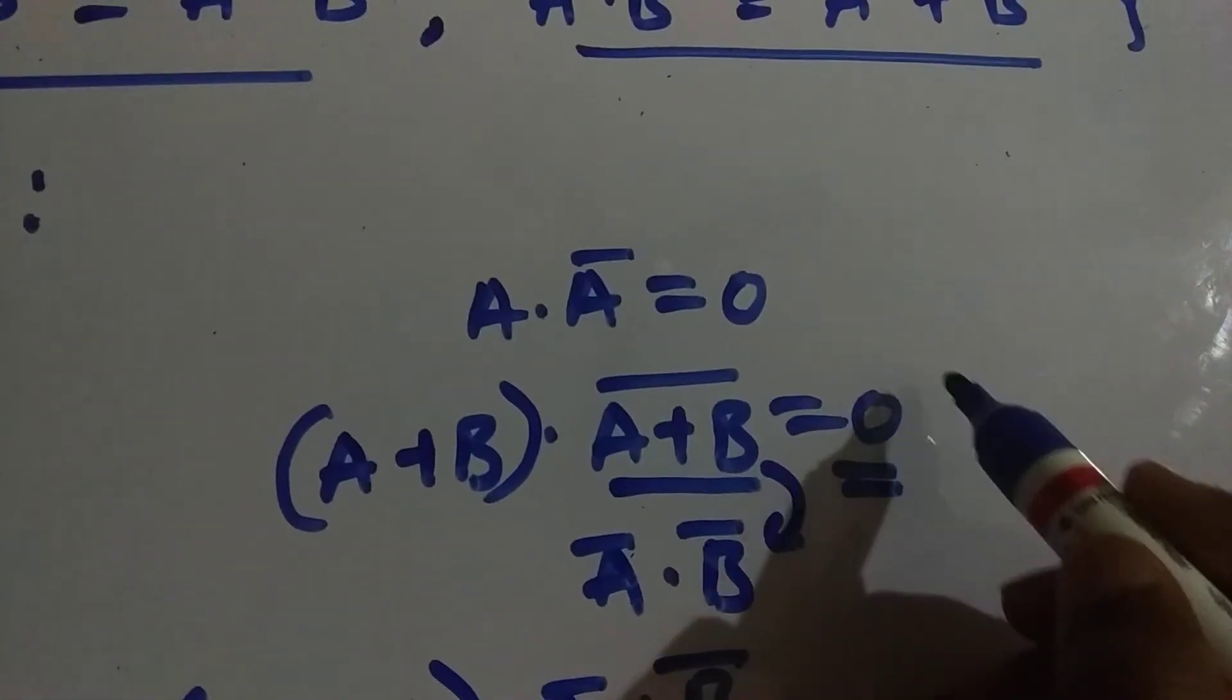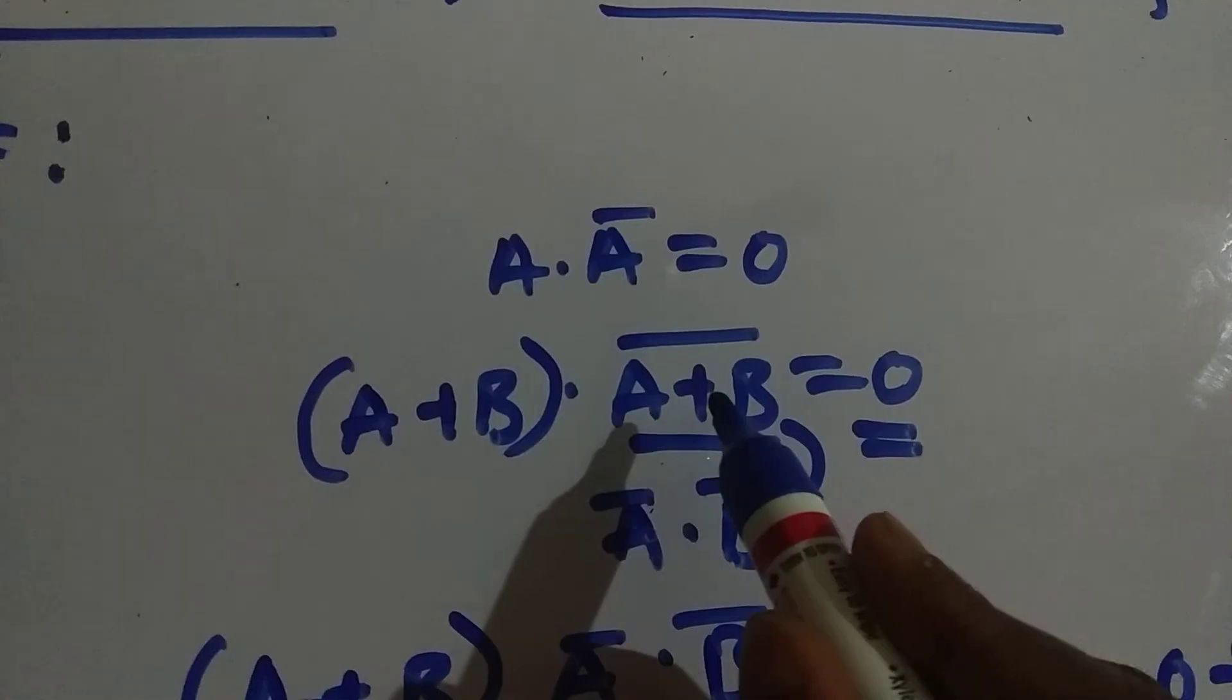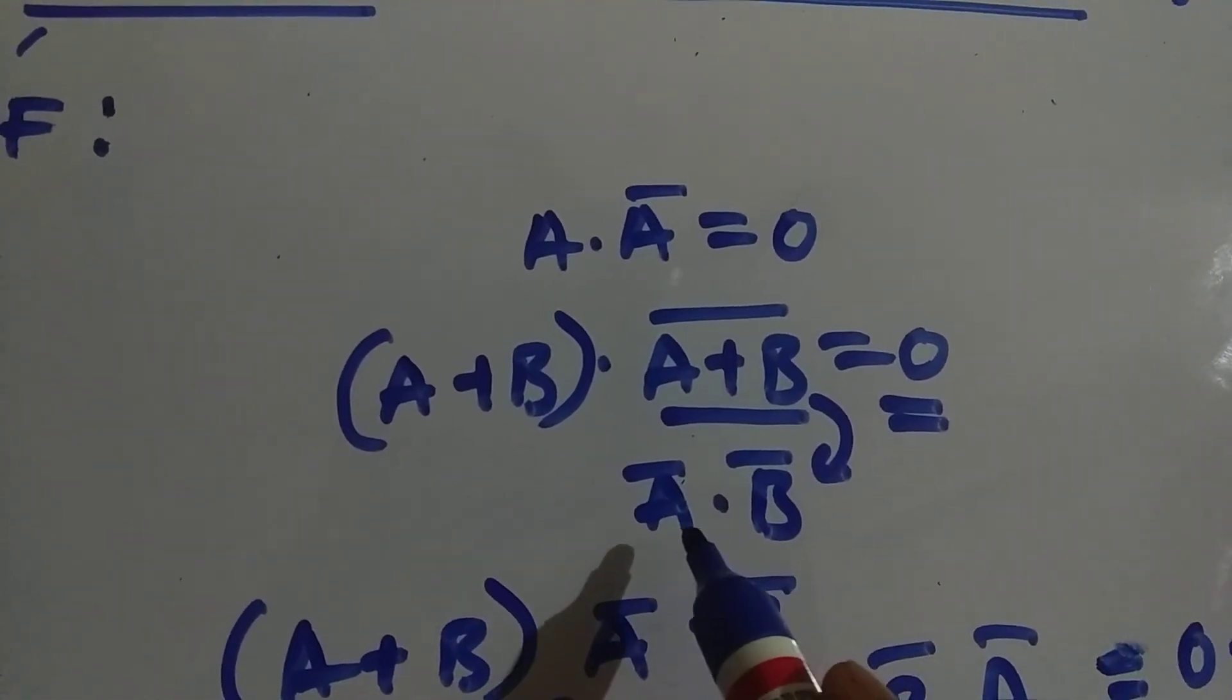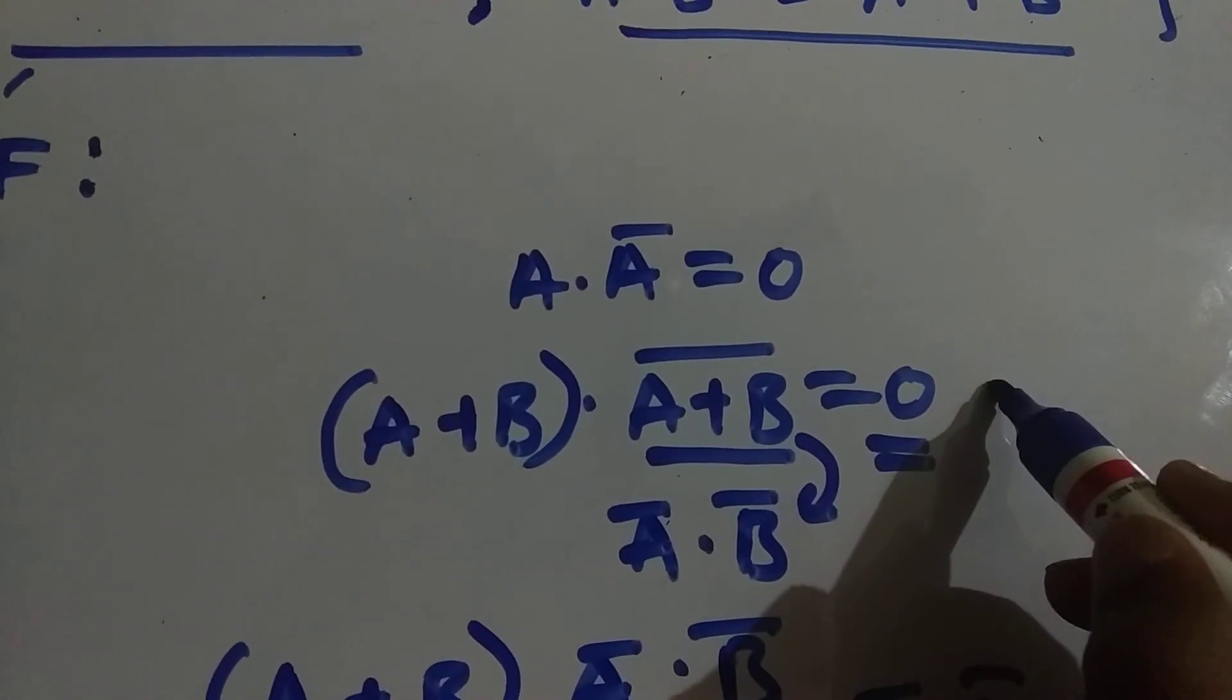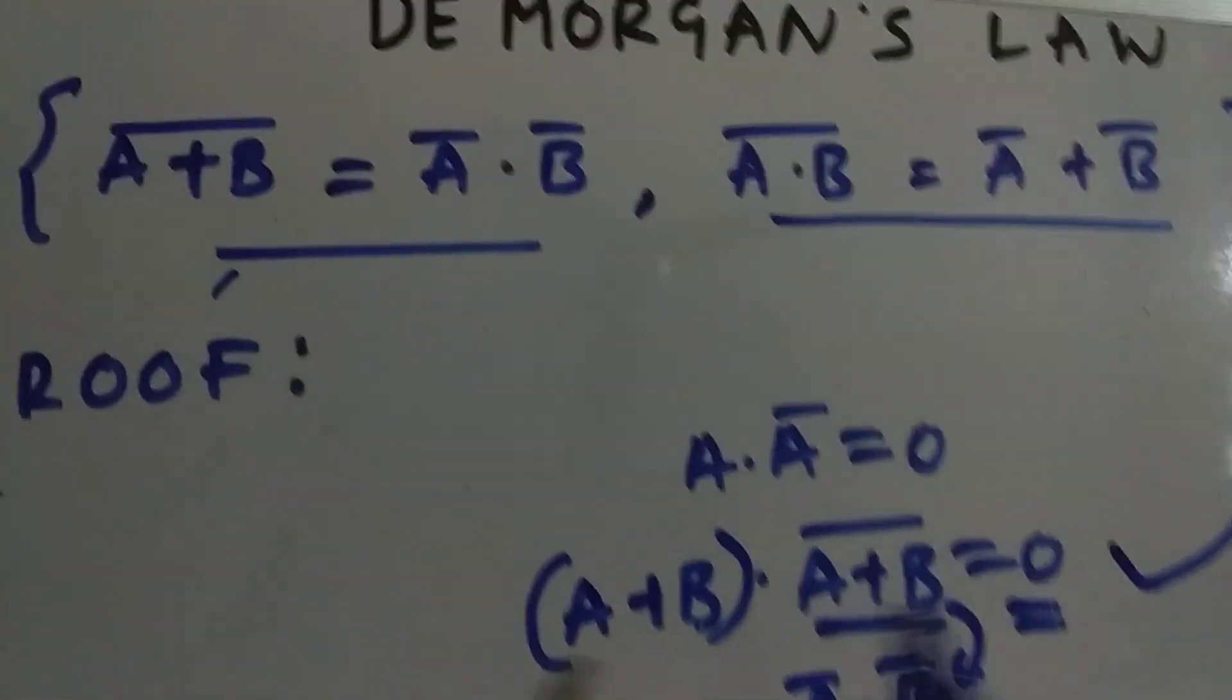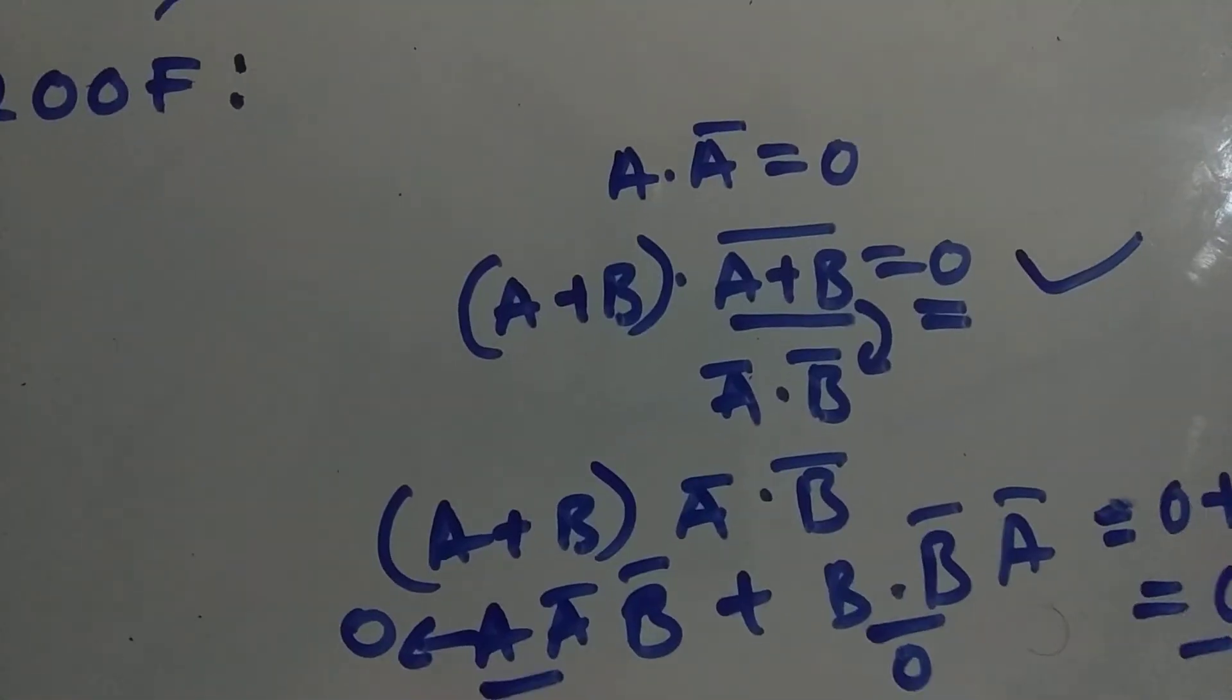I hope that you got clear. Even after changing from A plus B whole bar equals to A bar dot B bar, we are getting the same results. This is the proof of how to prove De Morgan's law.